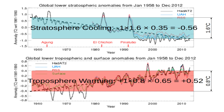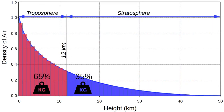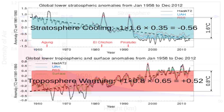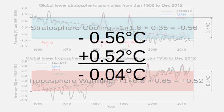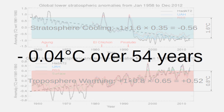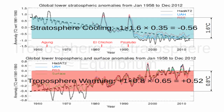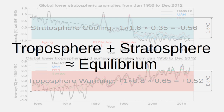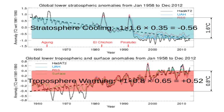Times 0.65 — and this 0.65 is the weight of the troposphere, which is 65%. When we add these two together, because the stratosphere and the troposphere are basically 100% of the weight of the whole atmosphere, this is minus 0.04 over the last 54 years — and this is equal to zero.